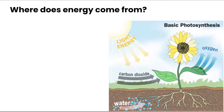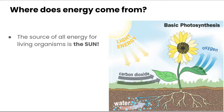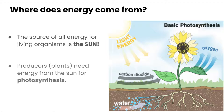Let's start off by reminding ourselves where energy comes from. It comes from the sun — the source of all energy for living organisms. The producers, or plants, need energy from the sun in order to undergo photosynthesis, which creates the chemical energy that the rest of our organisms consume.